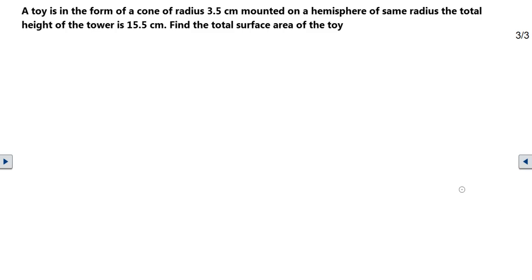Hi friends, welcome to my channel Math Army. Here's another question on surface areas and volumes. A toy is in the form of a cone of radius 3.5 centimeters mounted on a hemisphere of same radius. The total height of the toy is 15.5 centimeters. Find the total surface area of the toy.